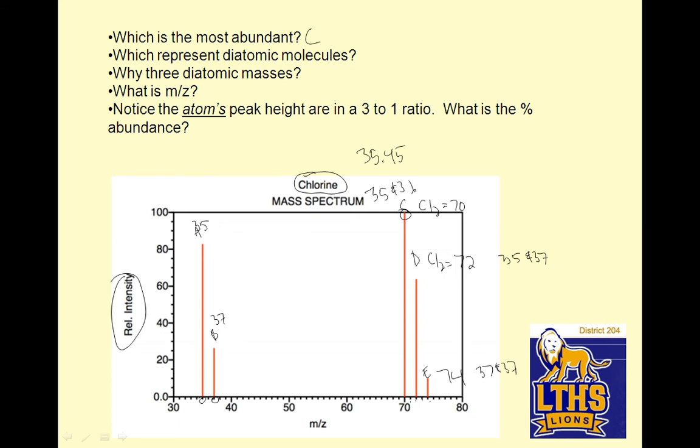So if you look, the most abundant is diatomic, even more than monatomic for when we break these apart into pieces. And then you can figure it out from there. Why three diatomic masses? Because there's three combos. What is M over Z? Basically, it is your mass. Right? Atomic mass.